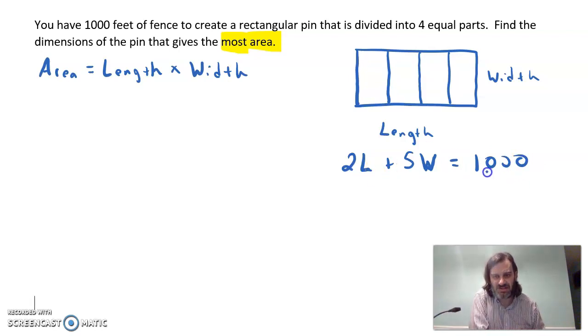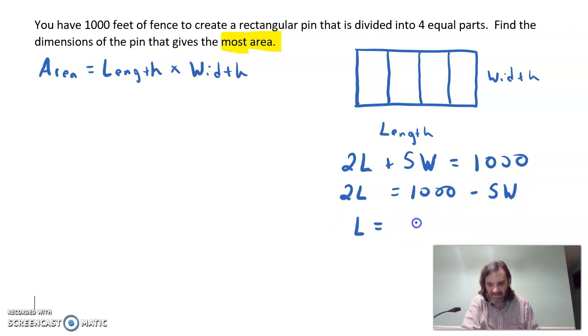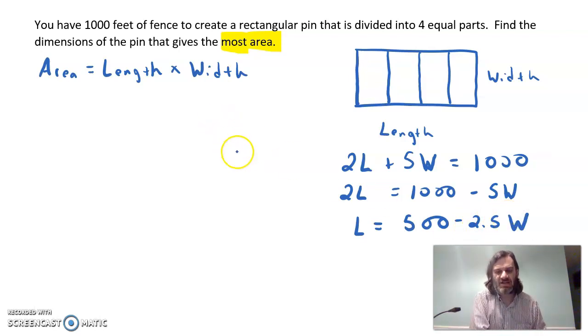So let's get one of these by itself. Let's say we get the L by itself. So we can say 2L equals 1,000 minus 5W. And if we divide by the two, we'll have L equals 500 minus, let's just go ahead and use the decimal, 2.5W. Okay, and that's the relationship between L and W based off of the thousand feet.